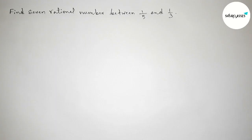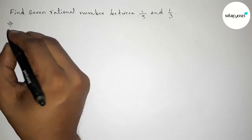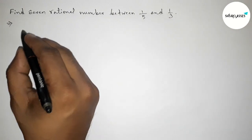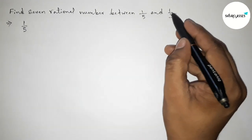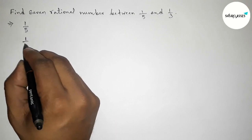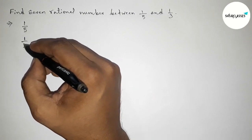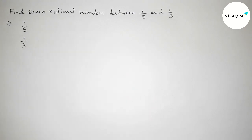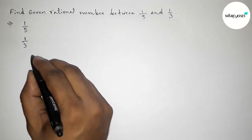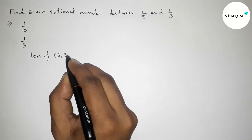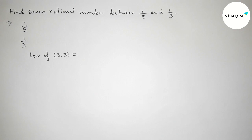First of all, let us solve this problem. Here the given first rational number is one by five and the second one is one by three. The denominators of both rational numbers are not equal, so we have to make equal denominators by finding the LCM of 3 and 5.